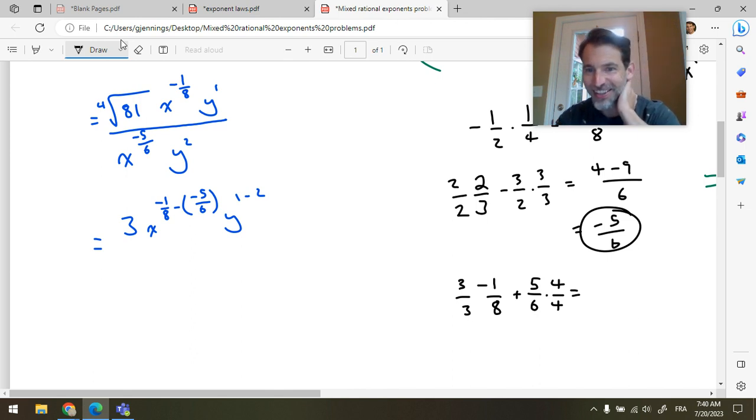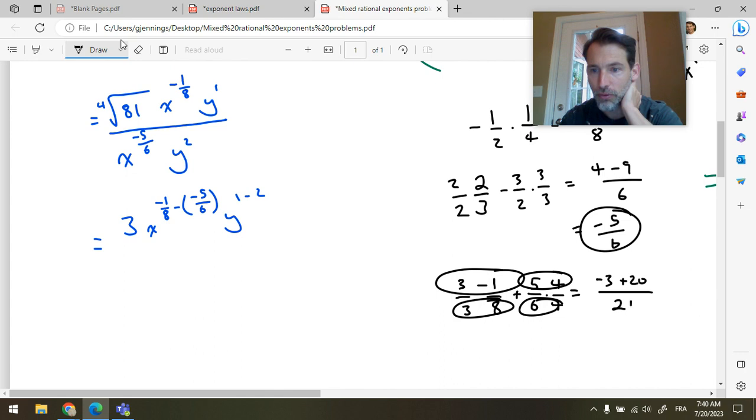So, this is minus three. That's this multiplication. Plus 20. That's that multiplication. All over 24. Common denominator 24. So, this is 17 over 24. What a delight.